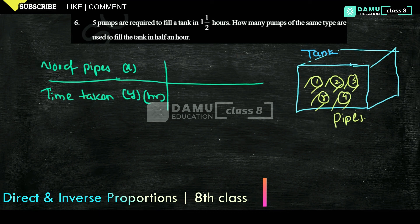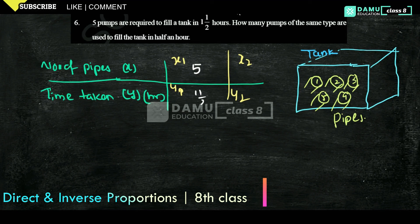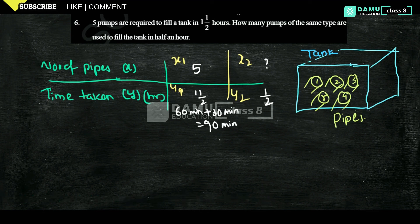Let's take the number of pipes as X and the time taken to fill the tank as Y in hours. We write X1, Y1 and X2, Y2. X1 is 5 pipes, Y1 is one and a half hours, which equals 90 minutes. X2 we have to find. Y2 is half an hour, which is 30 minutes.